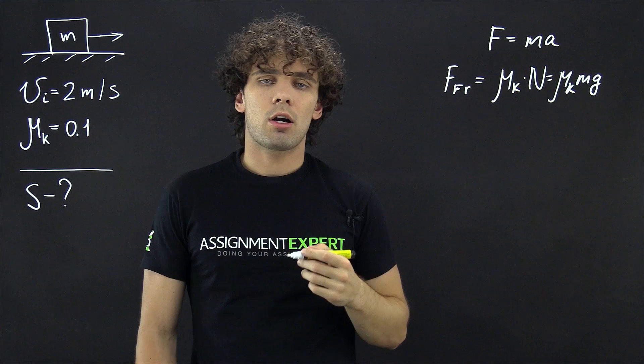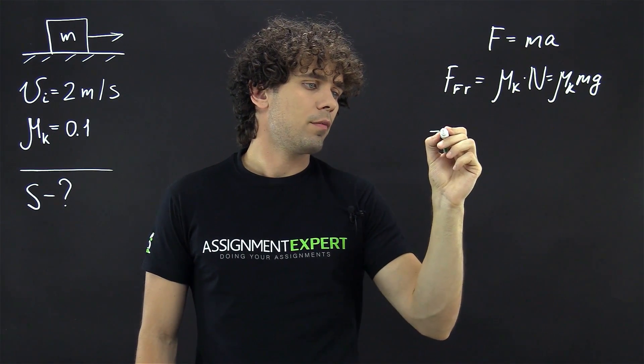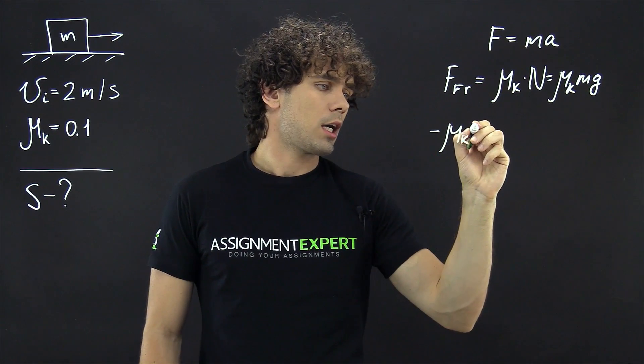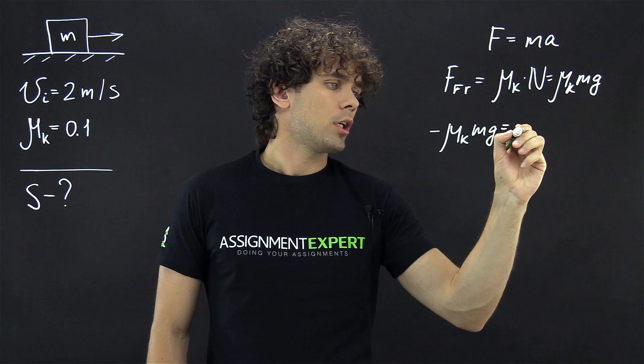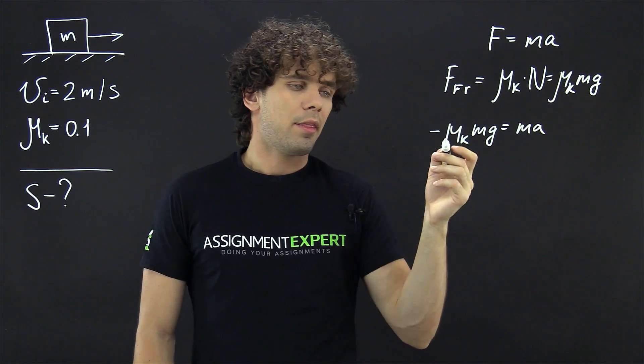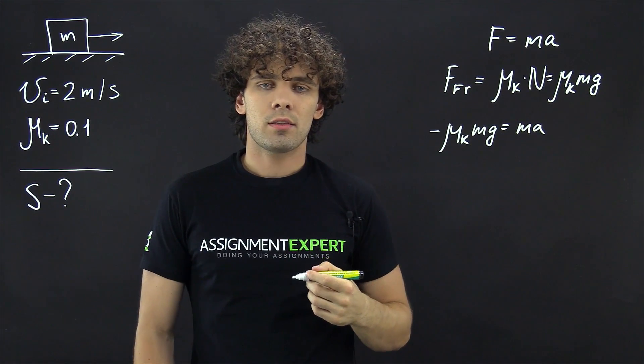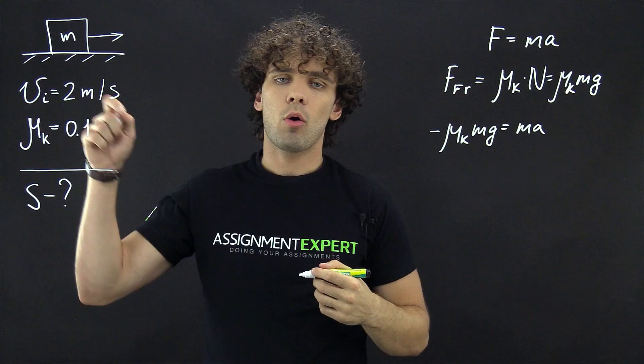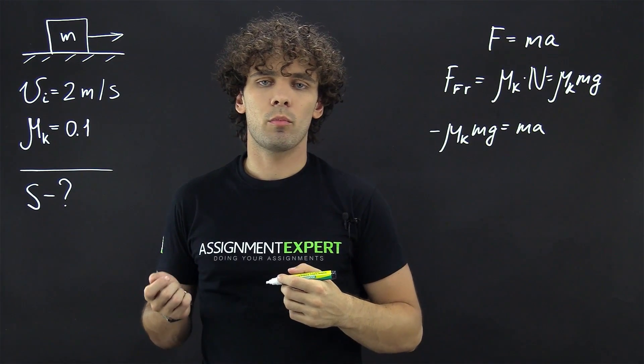So, now we can rewrite our first formula as negative mu k times m times g equals MA. And the negative sign over here indicates that this force is applied to the opposite direction to the direction of the movement of the box.